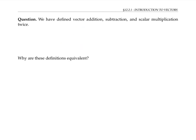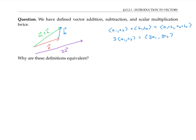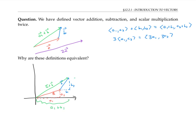You might wonder why the two definitions of vector addition — drawing arrows and using components — are equivalent. We can see this geometrically: if a has components ⟨a₁, a₂⟩ and b has components ⟨b₁, b₂⟩, then a plus b extends a₁ + b₁ in the x direction and a₂ + b₂ in the y direction. So vector addition by drawing arrows gives the same result as adding components.